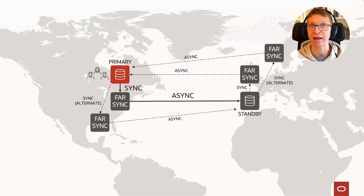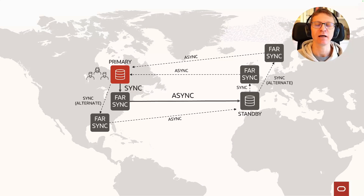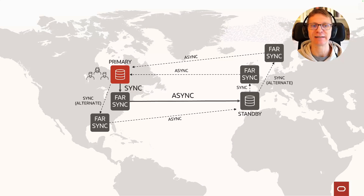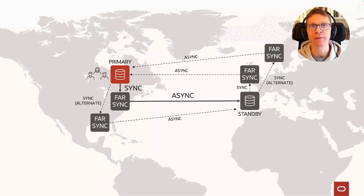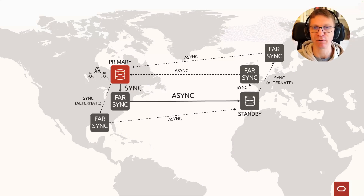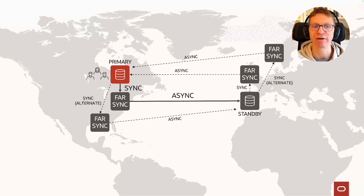If you need high availability for the Farsync instance, you can have multiple Farsync instances protecting the same primary database. If one Farsync instance is not available, the primary database can switch the redo destination to an alternate Farsync instance and keep working with full synchronous protection, because all transactions are protected synchronously to at least one Farsync instance.